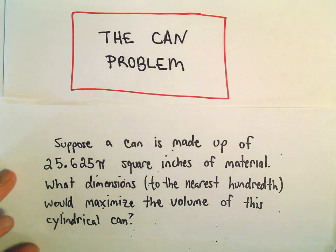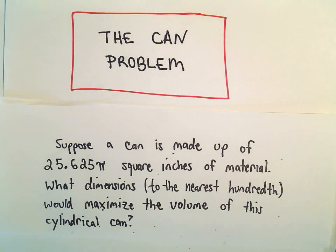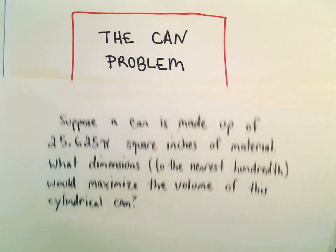Alright, in this video we're going to do an optimization problem related to a can. So we've got a can that's made up of 25.625π square inches of material. And we want to figure out the dimensions to the nearest hundredth that would maximize the volume of this can.